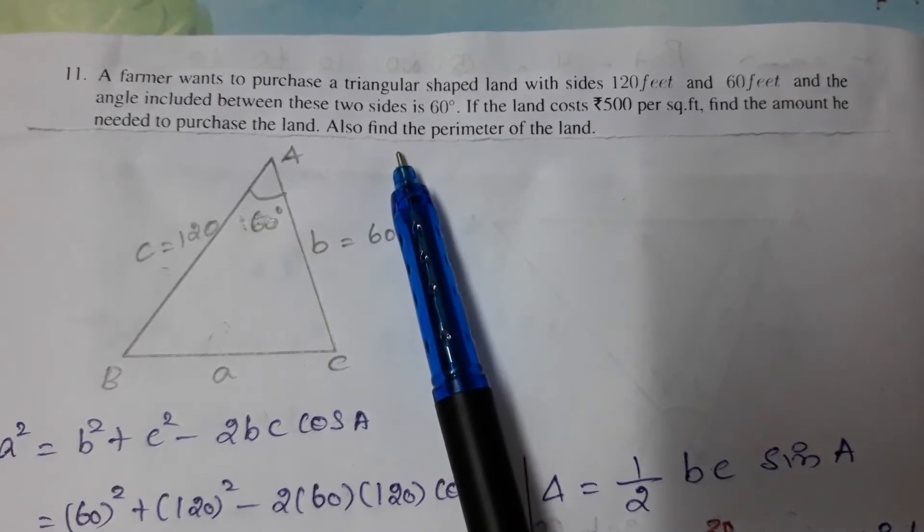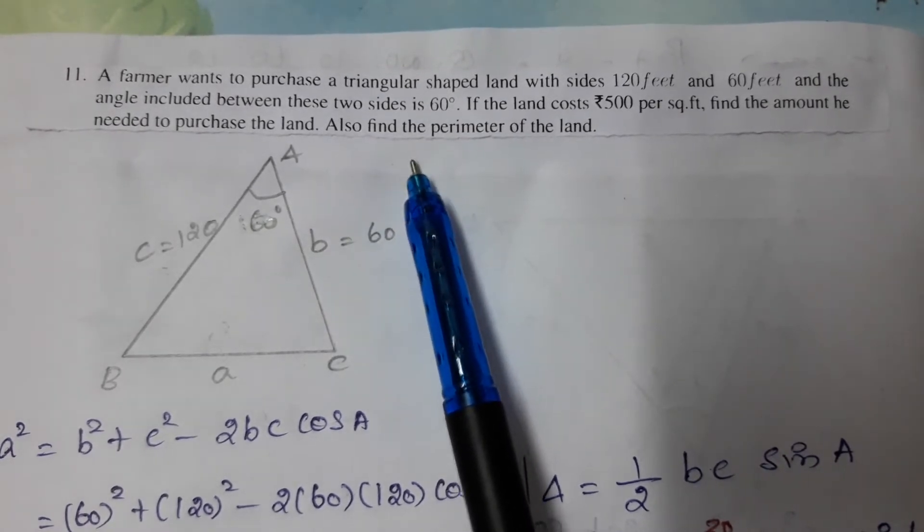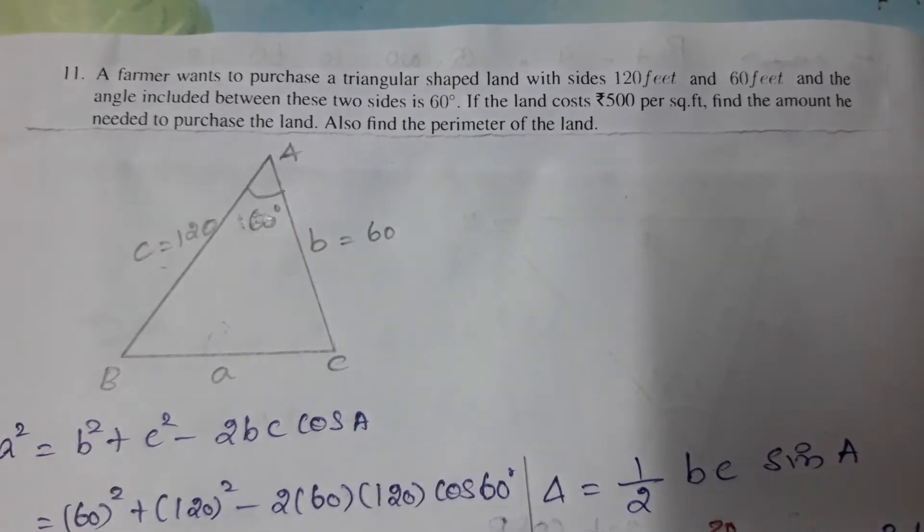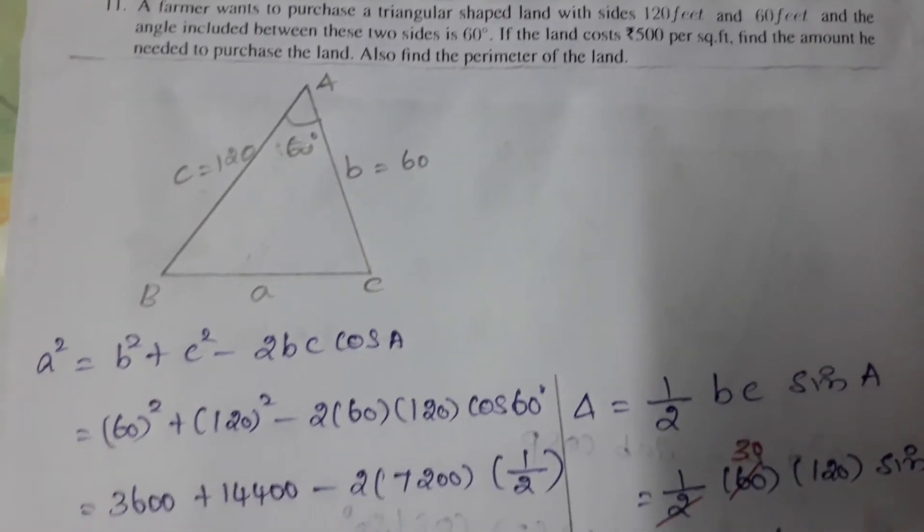This is one of the important 5-mark questions in this exercise. We need to find two answers: total amount and perimeter. Let's draw the diagram with triangle ABC where the included angle is 60°.